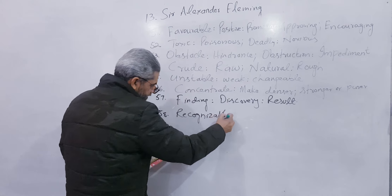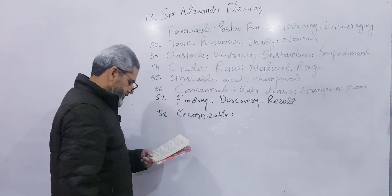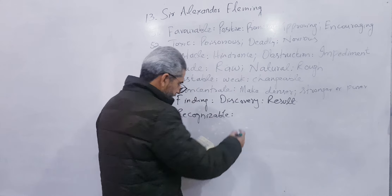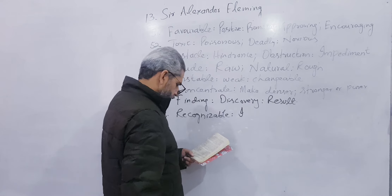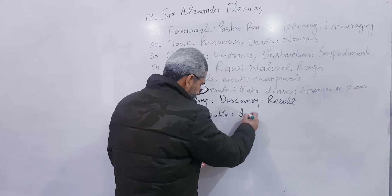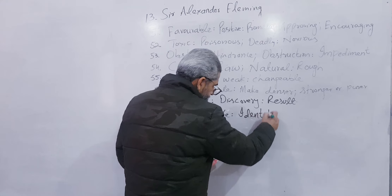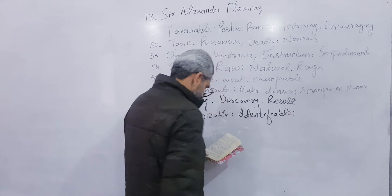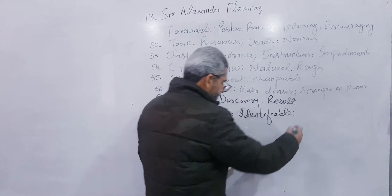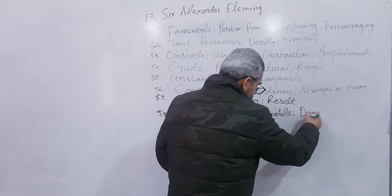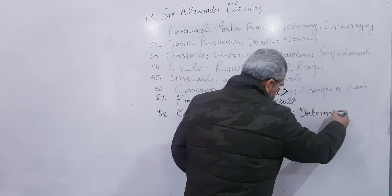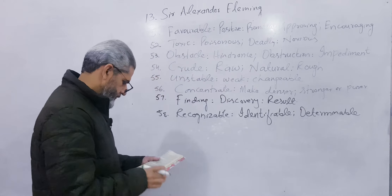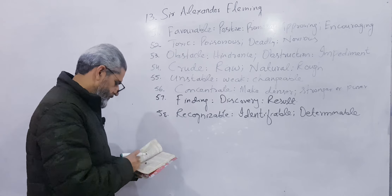Number 57: Recognizable — recognizable, which is also identifiable.